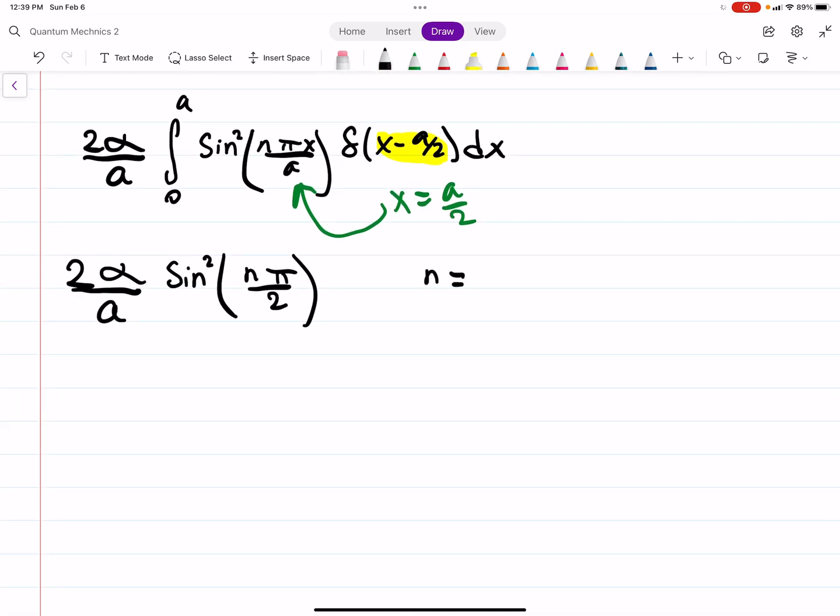Notice what happens if n is an odd number. If n is an odd number, you're going to get sine of pi over 2, 3 pi over 2, 5 pi over 2. So sine of n pi over 2 will be either plus or minus 1, but sine squared will just be plus 1. So when n is odd, you get sine equals 1, sine squared equals 1. When n is even, you're going to get sine of 0, sine of 2 pi over 2, 4 pi over 2, and so on, and that's going to be 0.